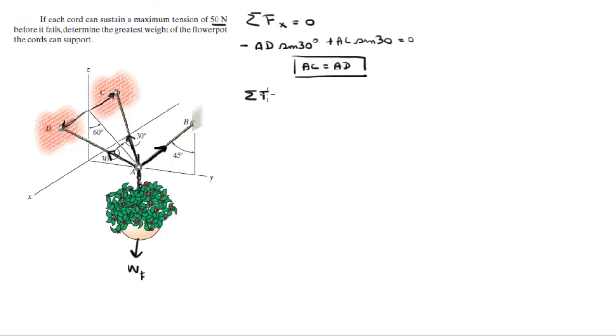Now, sum of the forces in the z direction are also equal to zero. Let's find a new point. I'm going to call this point right here E. So this is the projection of AD and AC onto the zy plane. AE is equal to AC cosine of 30. That is also equal to AD cosine of 30 because they're both equal. So AE is basically the projection of these two forces into the z and y plane.